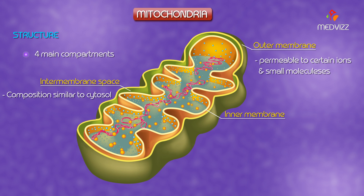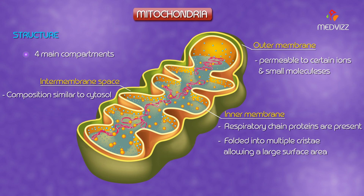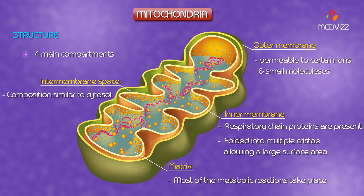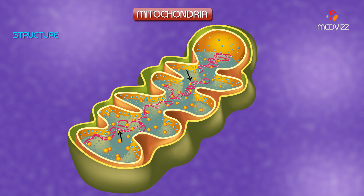The inner membrane, in which are found the respiratory chain proteins. The inner membrane is folded into multiple cristae, allowing for a large surface area. The matrix, or the inner part of the mitochondrion, where most of the metabolic reactions take place. The mitochondrial DNA is found within DNA-protein complexes called nucleoids in the mitochondrial matrix.